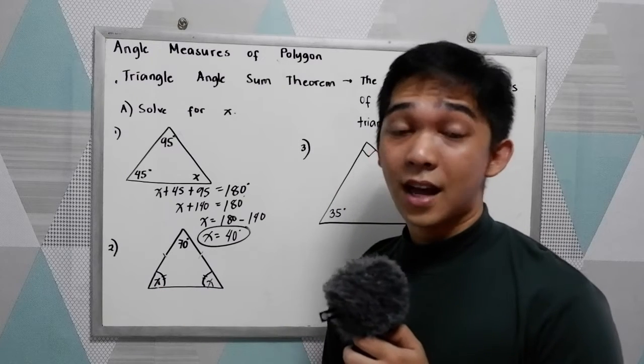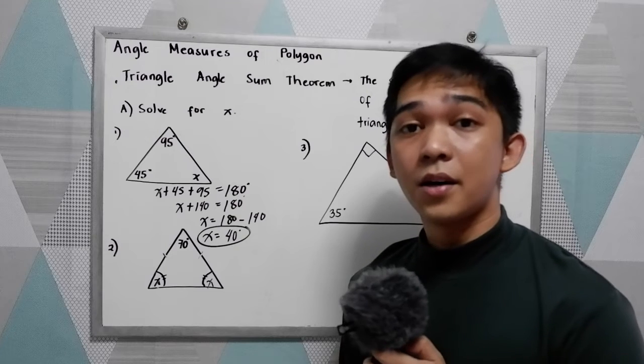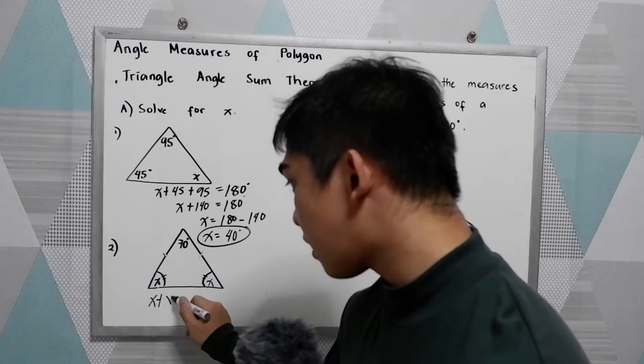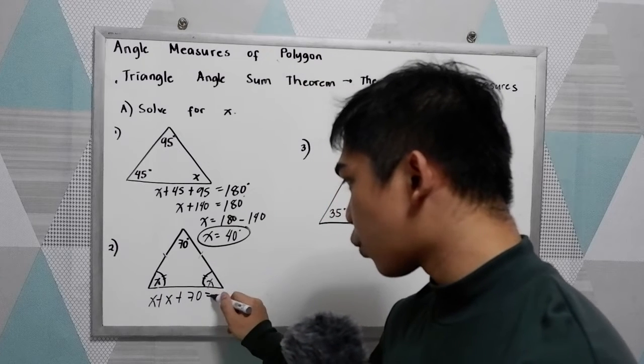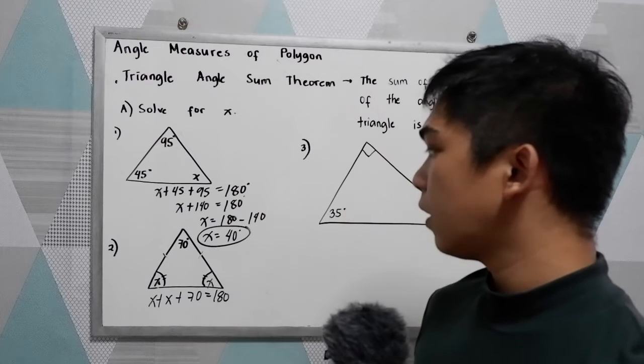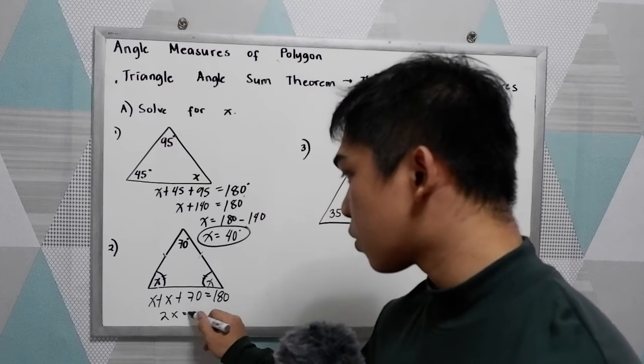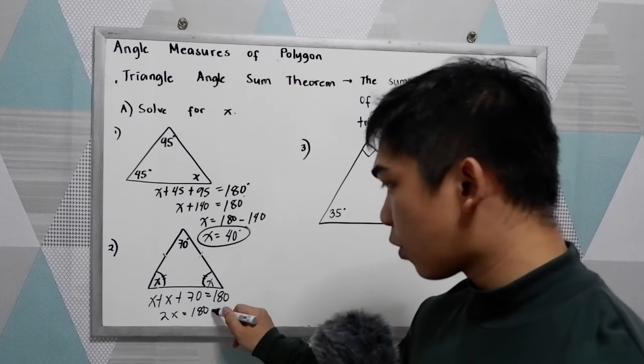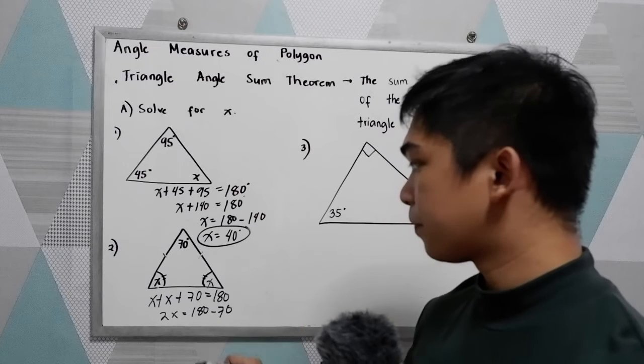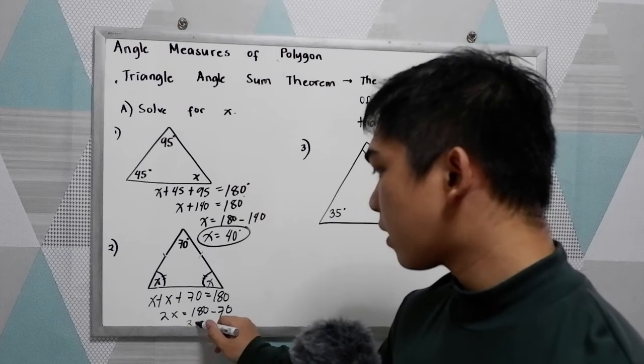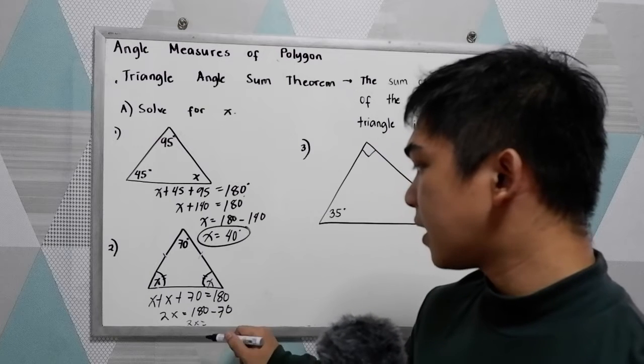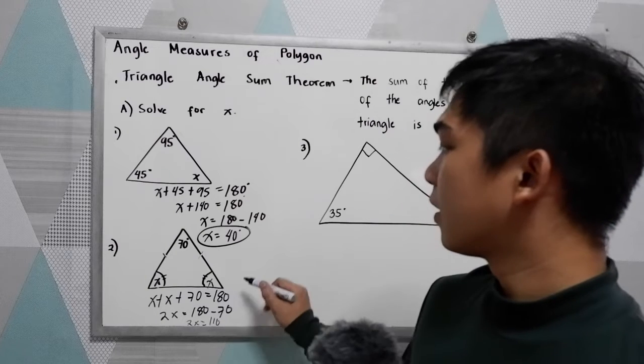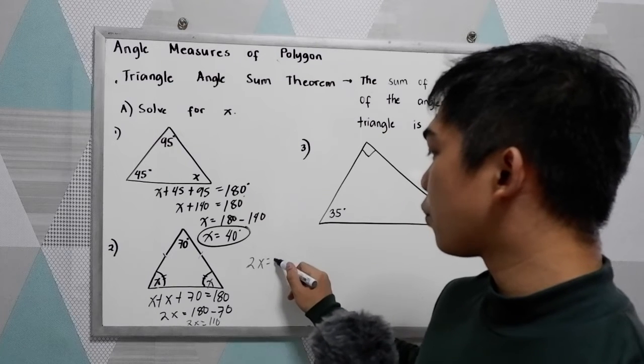Because base angles of an isosceles triangle are equal. So now we have x plus x plus 70 is equal to 180. Now we have 2x is equal to 180. Move positive 70 to the right, that will become negative 70. Now we have 2x is equal to 180 minus 70, that is 110.